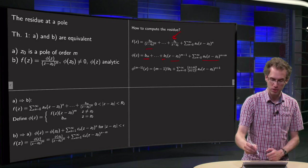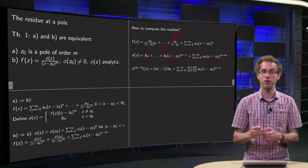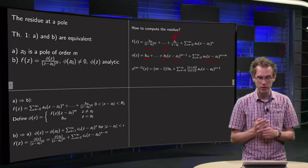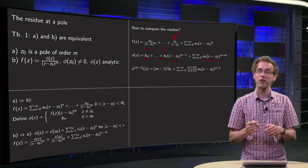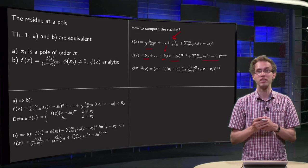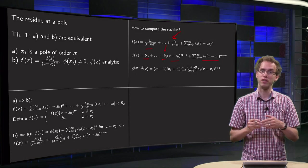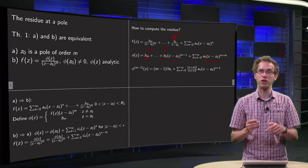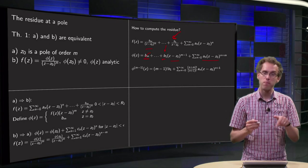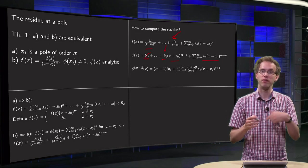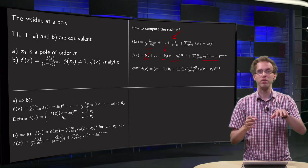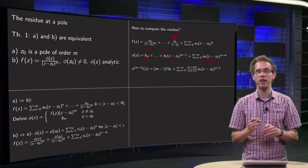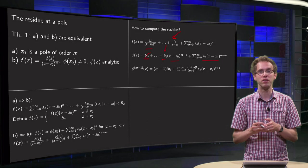We still want to get the b1, but we still have a lot of rubbish in front of it. Now we're going to do the following trick. We're going to differentiate a few times, because if we differentiate once, then the bm vanishes, and the first term becomes b(m-1), and we differentiate again and again, and we differentiate the full first part away.